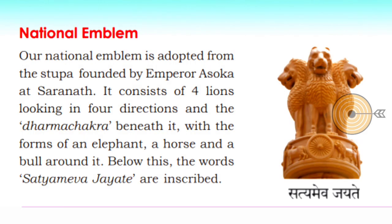Our National Emblem is adapted from the stupa founded by Emperor Ashoka at Sarnath. It consists of four lions looking in four directions, with the Dharma Chakra beneath it, surrounded by the forms of an elephant, a horse, and a bull. Below these, the words Satyameva Jayate are inscribed.